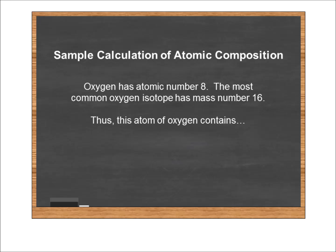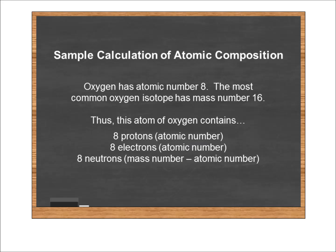Let's just do a couple quick examples. Oxygen has atomic number 8, and the most common isotope has mass number 16. So with that in mind, this atom contains eight protons from its atomic number, eight electrons from its atomic number, and eight neutrons, which is derived by subtracting 16 total particles in the nucleus, subtract from that the eight protons, which give us eight neutrons.